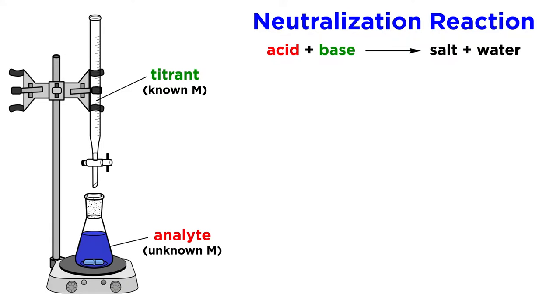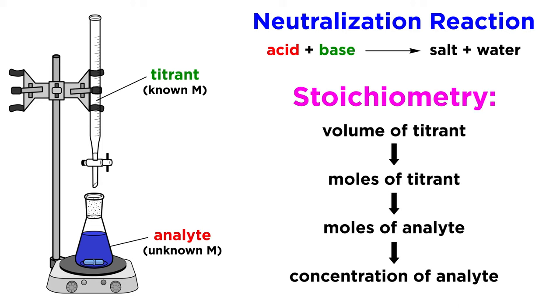This is a neutralization reaction where we use an acid or base of known concentration to determine the concentration of the other reagent. This is because we can find the stoichiometric amount of acid or base titrant that must be used to precisely neutralize the analyte, and then use the volume of titrant added to calculate the concentration of the analyte.